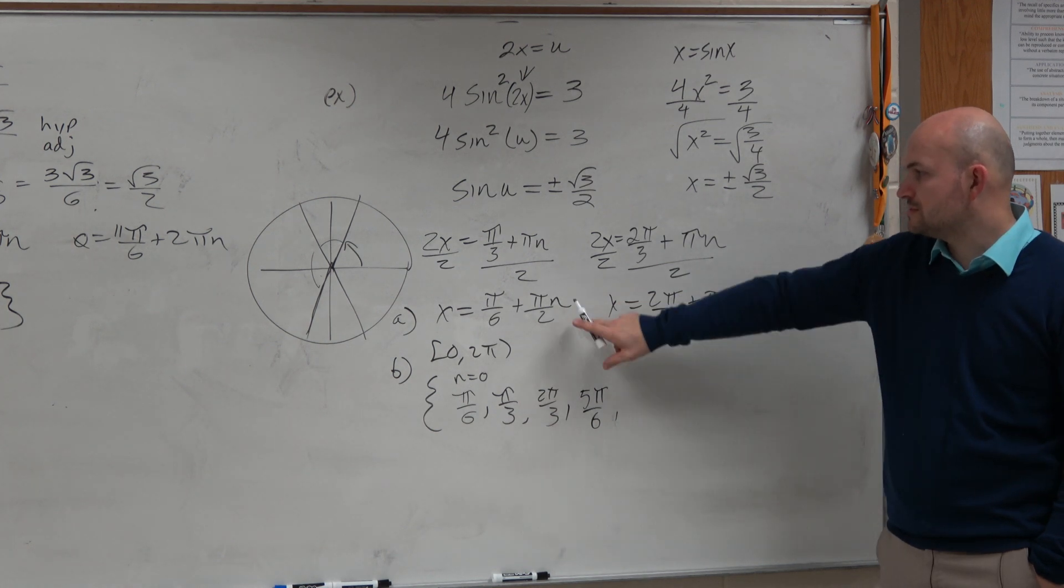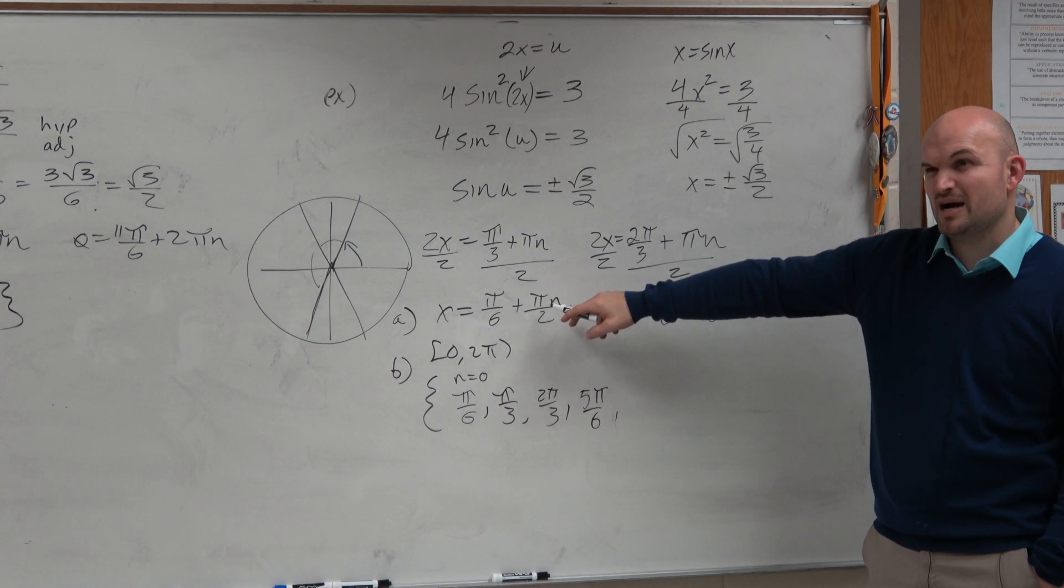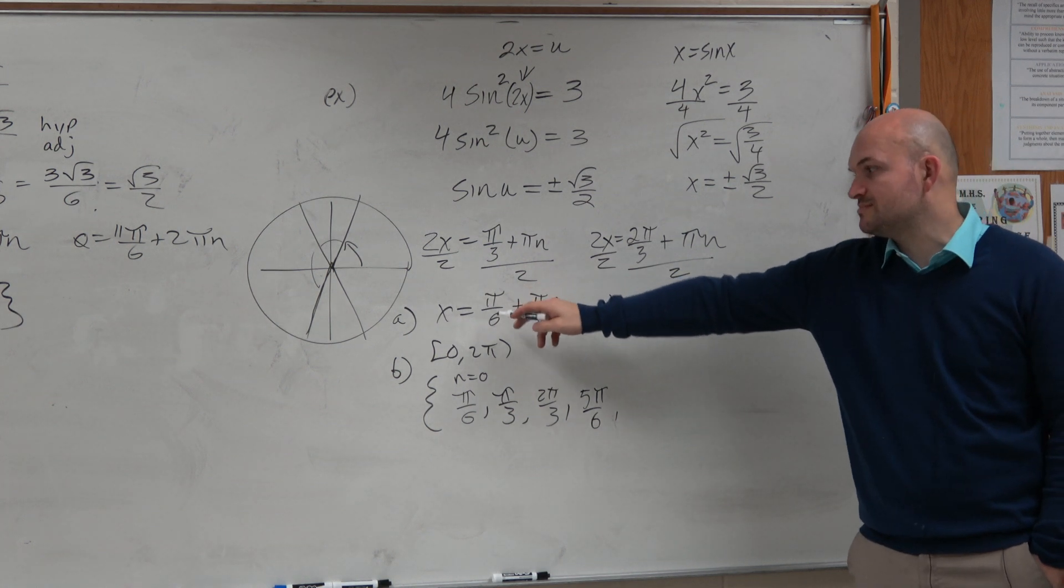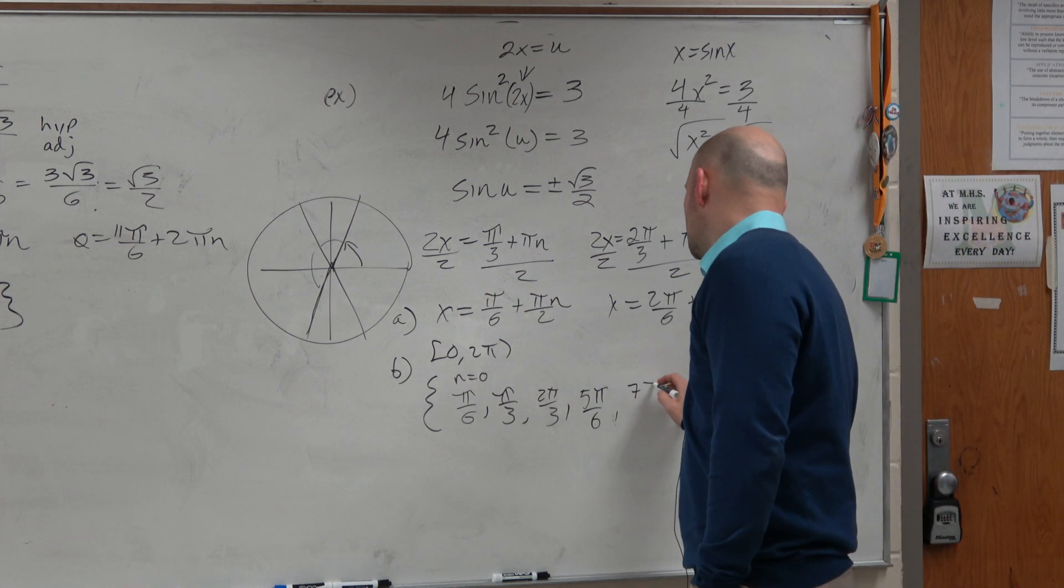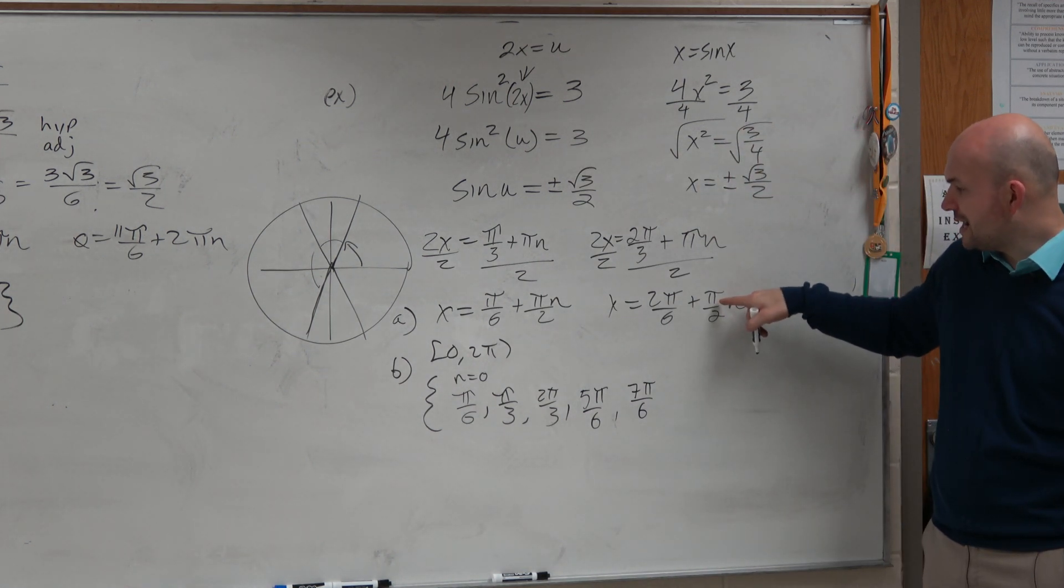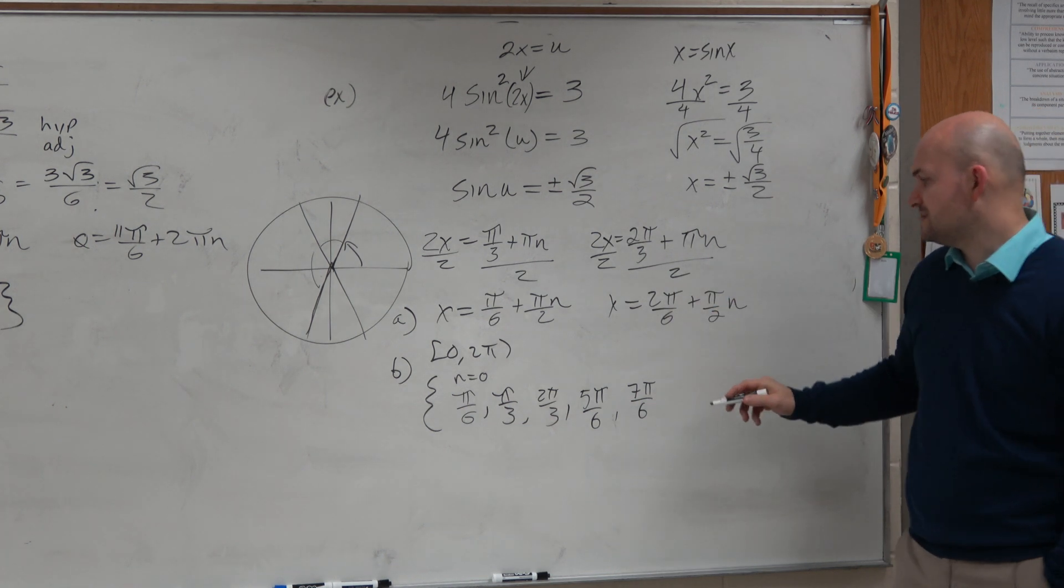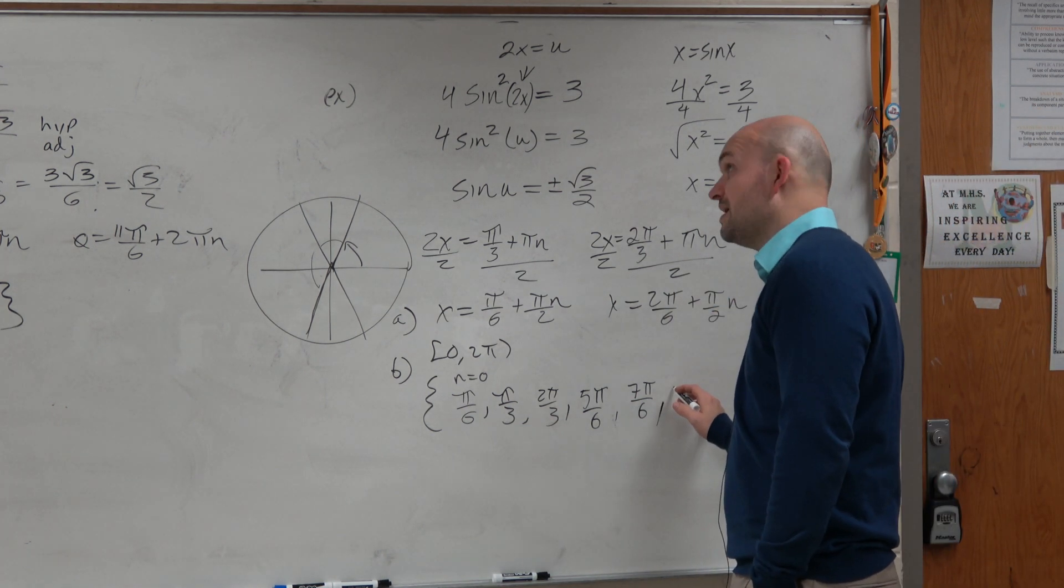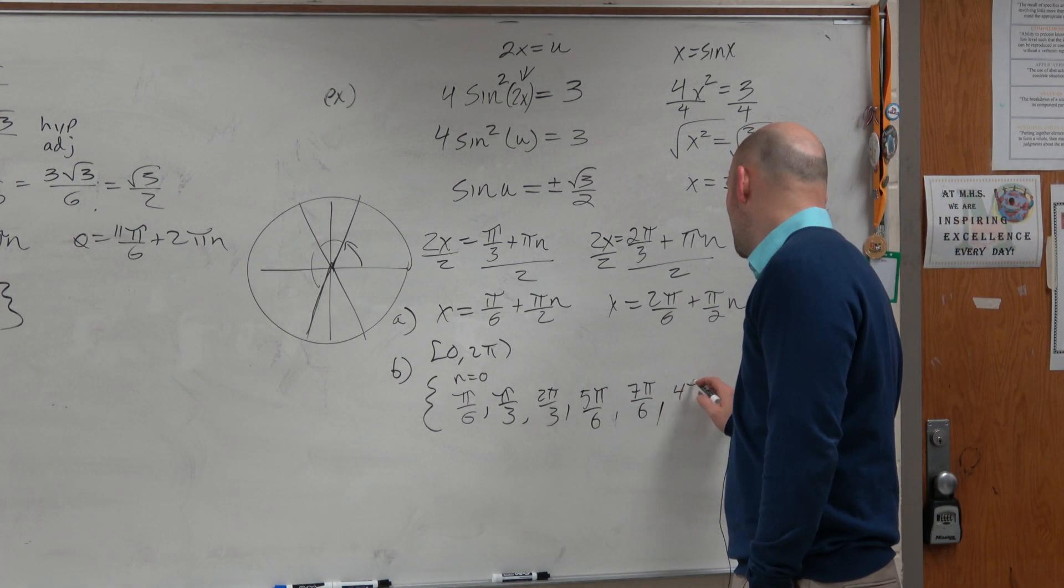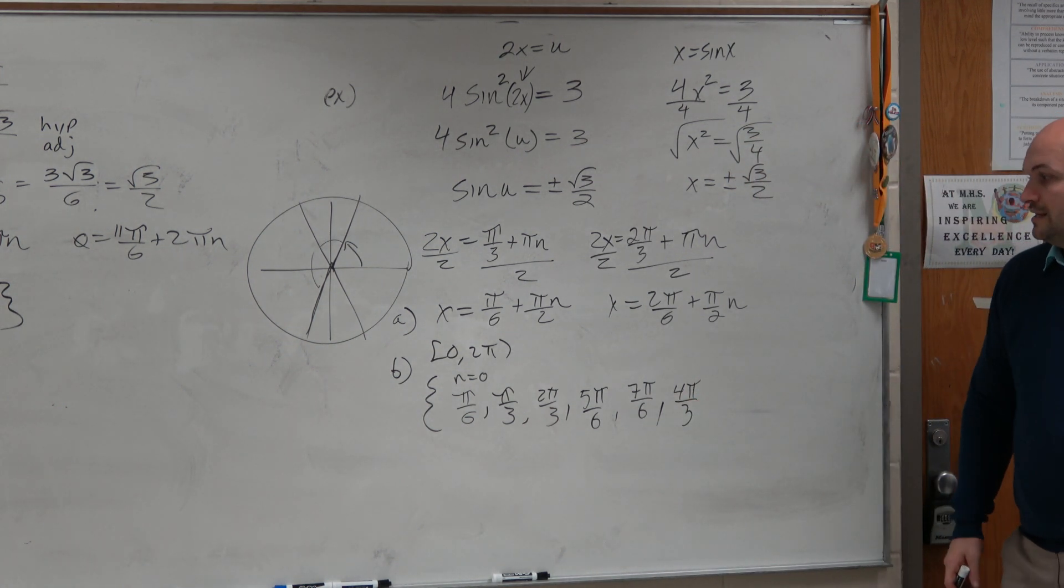All right, let's do when n equals 2. So then that's technically π, which is the same thing as 6π over 6. 6π over 6 plus π over 6 is 7π over 6. When n is 2, you would get π, which is really 6π over 6. 6π over 6 plus 2π over 6 is 8π over 6, which would be 4π over 3.